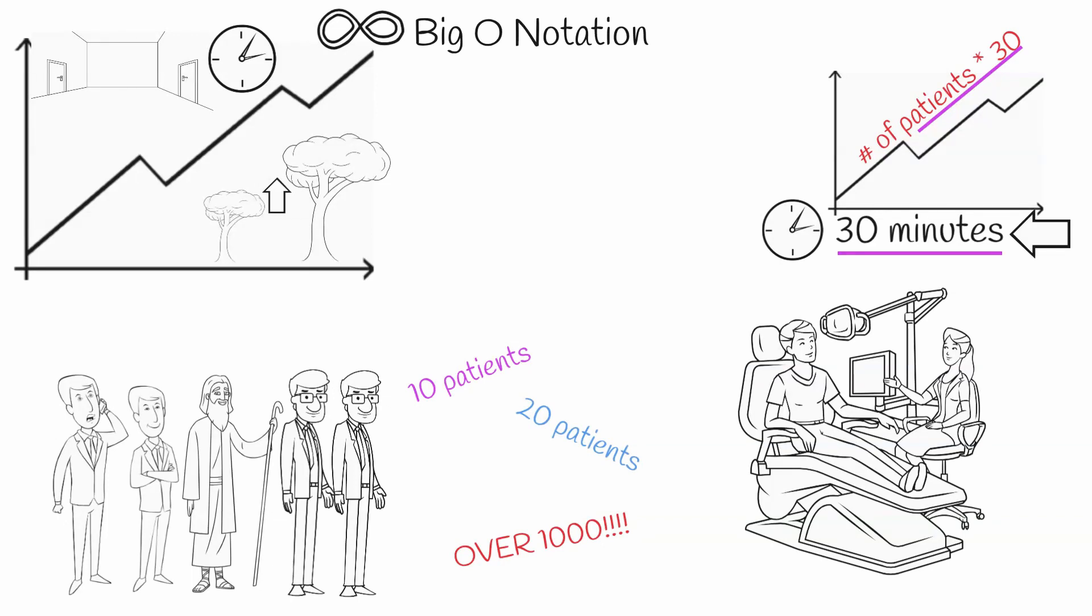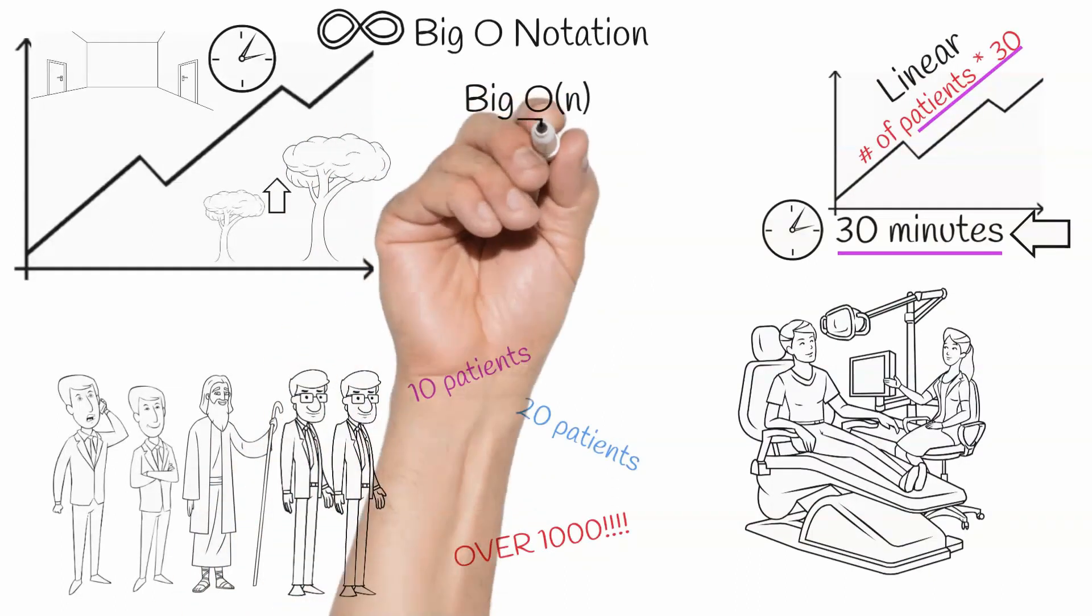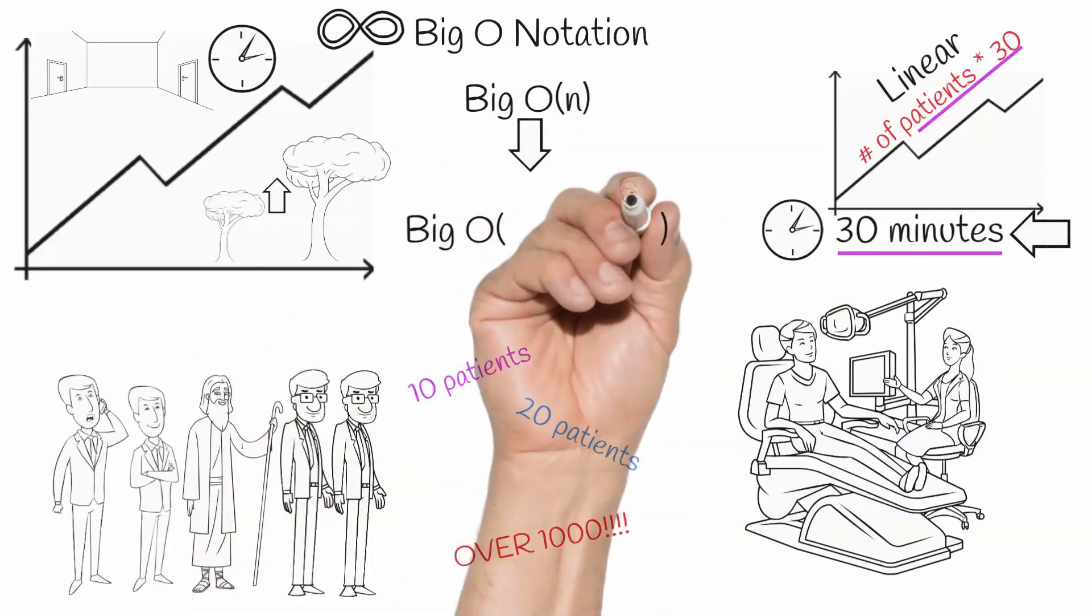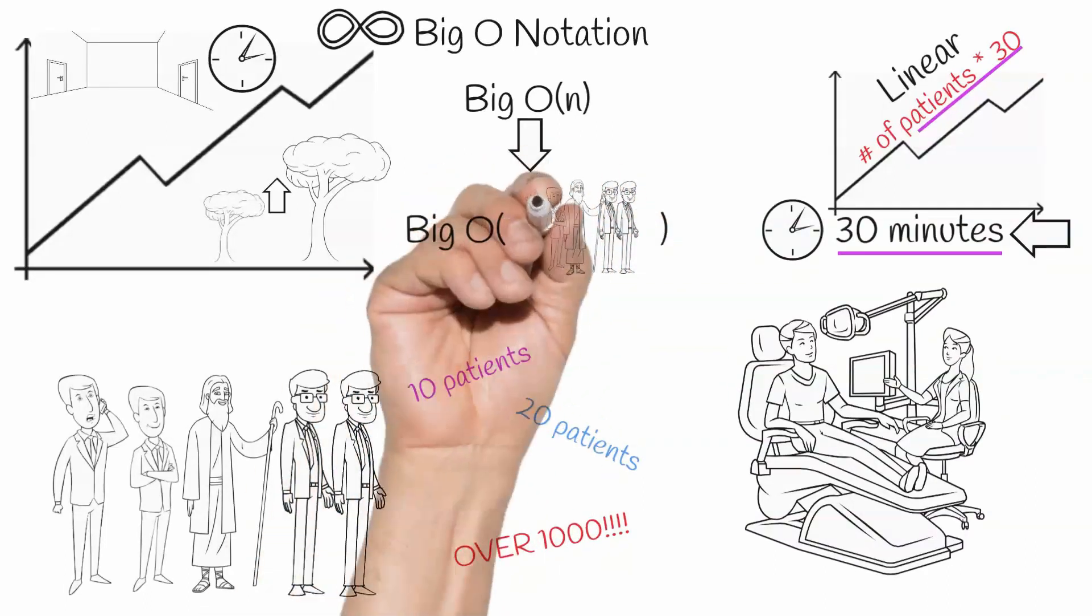With this in mind, we can categorize her efficiency as being linear, or as we would say in Big O terms, Big O of n, where n is equal to the number of patients. The time that it takes for her to finish her work scales linearly or proportionally with the number of patients.